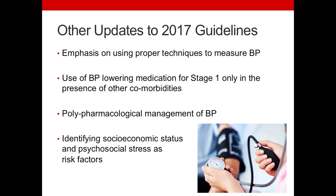Finally, the guidelines also recommend identifying socioeconomic status and psychosocial stress as factors for high blood pressure that should be considered in a patient's care plan — looking at the patient overall, not just what's going on medically, but what's going on in their lives that can affect their medical conditions.